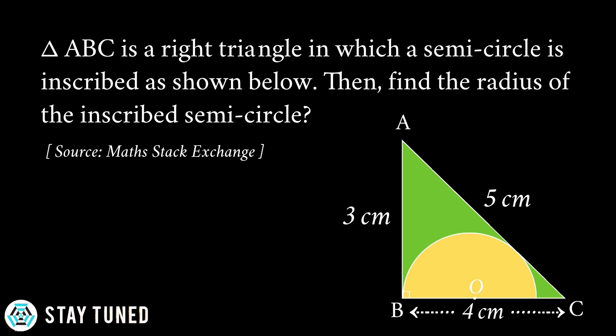The given measurements are AB equals 3 cm, BC equals 4 cm, AC equals 5 cm, and O is the center of the semicircle. This question was asked by a student on Math Stack Exchange.